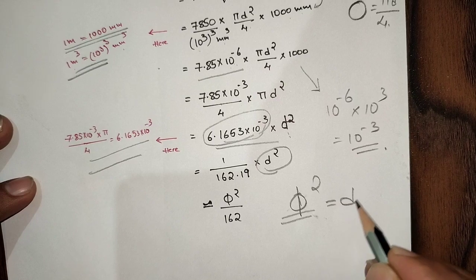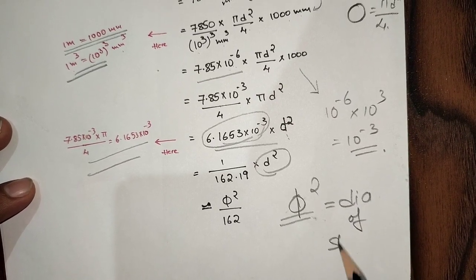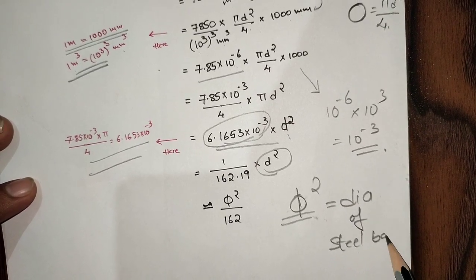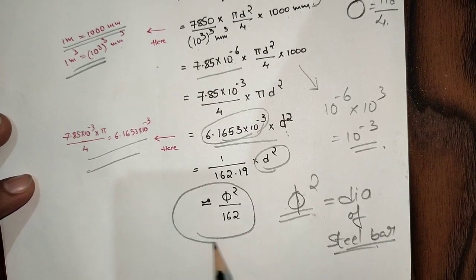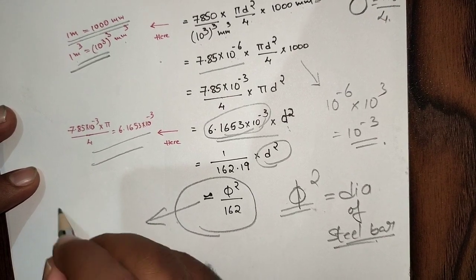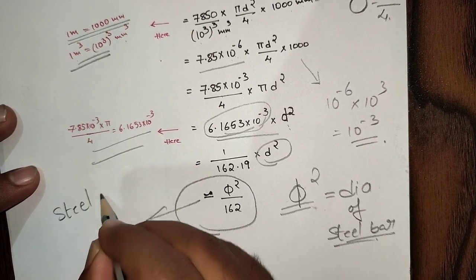Now φ is the diameter of steel bar. So approximately φ²/162 is the value to calculate weight of steel per meter. This is the empirical formula derivation.